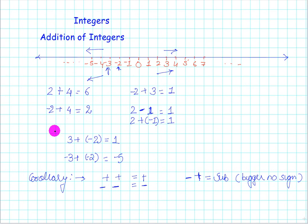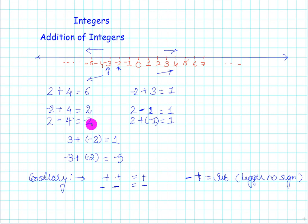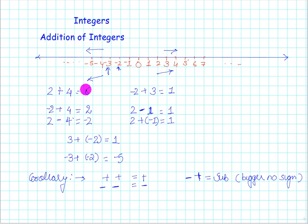If it were the other way — 2 minus 4 — you would be at position 2 and move backward by 4, reaching minus 2. As 4 is the bigger number with a negative sign, you reach a negative number. So when a negative number is added to a positive number, subtraction happens and the sign is always that of the bigger number. With same-sign numbers like 4 plus 2, the value increases to 6. With different signs like minus 4 plus 2 or 2 minus 4, the value decreases — it is actually subtraction.